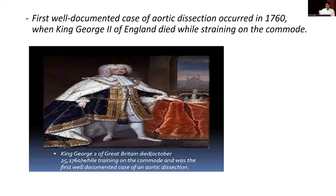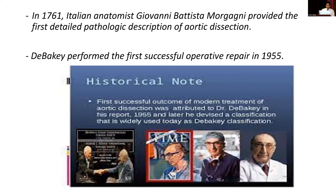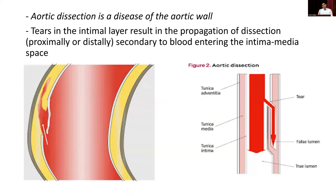The first documented case of aortic dissection was in 1760 when King George II died while straining due to aortic dissection. In 1761, Italian anatomist Giovanni Battista provided the first detailed pathologic description. DeBakey performed the first successful operative repair. Aortic dissection is a disease of the aortic wall where a tear in the intima layer results in propagation of dissection — proximally or distally — secondary to blood entering the intima-media space.